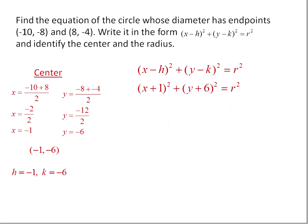We can substitute these into the formula. So we have x minus negative 1 squared, or x plus 1 squared, and y minus negative 6 squared, or y plus 6 squared, equals r squared.